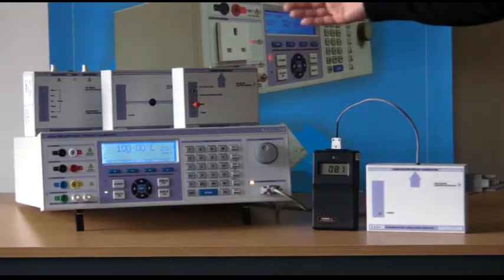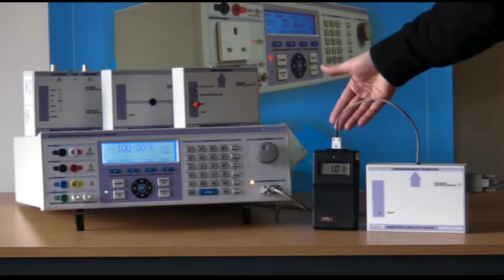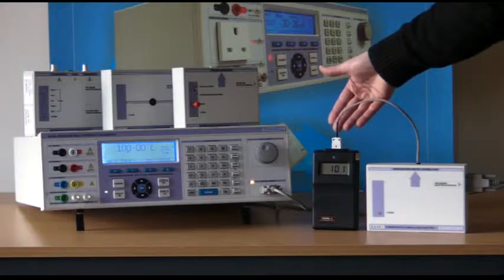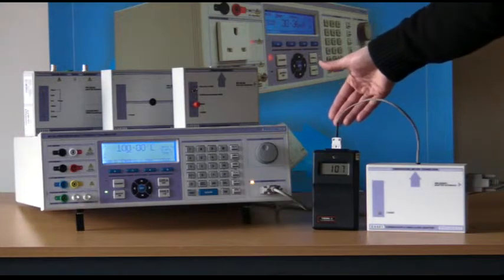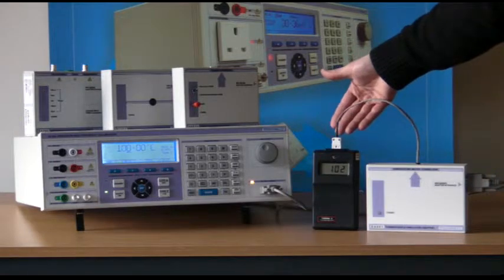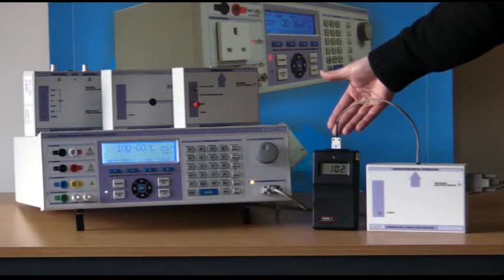The calibrator will control the adapter to output the desired thermocouple voltage and display the correct temperature on the temperature meter. The built-in temperature sensor in the thermocouple connector compensates for the ambient temperature using the Auto cold junction mode.